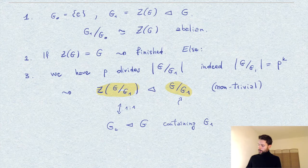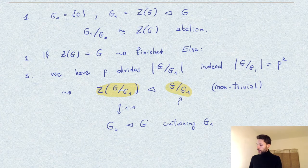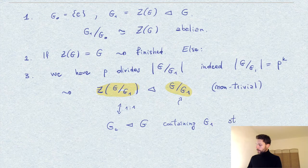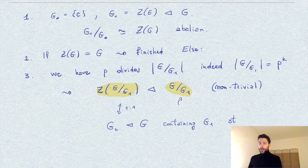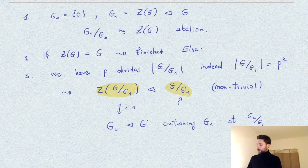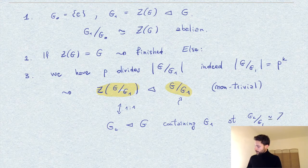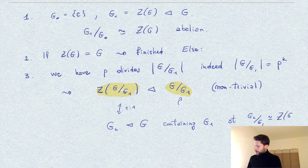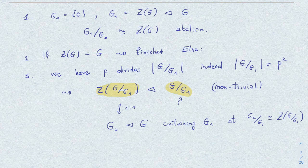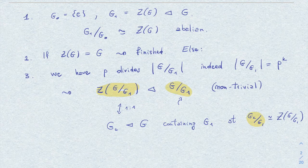In other words, there is a unique G_2, a normal subgroup of G containing G_1, which corresponds to this center Z(G/G_1), in the sense that the quotient G_2 over G_1 is precisely isomorphic to this center. So in particular, this guy here is abelian.